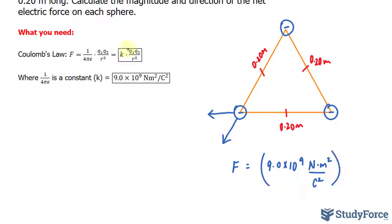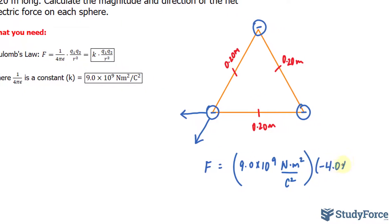That gets multiplied by Q sub 1 and Q sub 2, which represents the charges of these spheres. Since they're both the same, given in the question as negative 4.0 times 10 to the power of negative 6 Coulombs, all we have to do is take this value and square it, since we're multiplying it by itself twice.